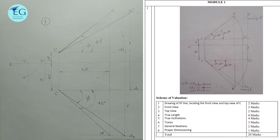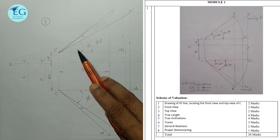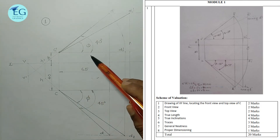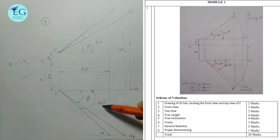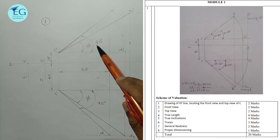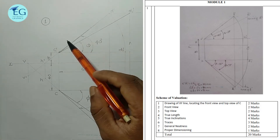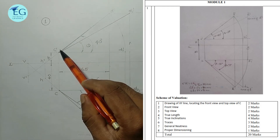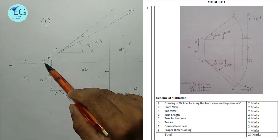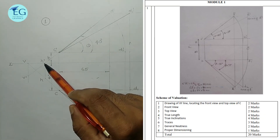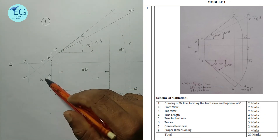Next, finding the true inclination earns 4 marks. This involves using c dash d1 dash and cd2 to determine the true inclinations with HP and VP.